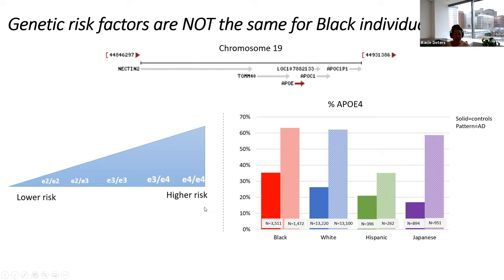Looking at the percentage of APOE4 across different ethnic and racialized groups, the solid bars represent cognitively normal controls while the patterned bars represent individuals with Alzheimer's disease. Black individuals actually have the highest percent frequency of the E4 allele compared to white, Hispanic, or Japanese individuals. However, looking at Alzheimer's disease cases, the rate is pretty similar to that of white individuals. This suggests — as numerous studies have shown — that E4 may have less of an effect on Alzheimer's disease risk and cognitive decline in people racialized as Black.